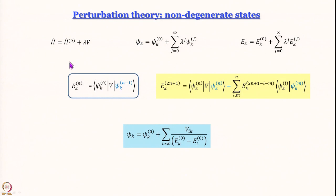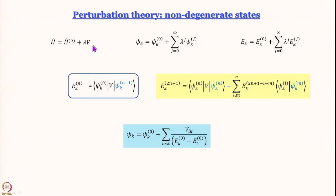Before that, let us not forget what we have studied. In perturbation theory for a non-degenerate state, one can represent the wave function as an unperturbed wave function — essentially the wave function of a system which is exactly solvable. We have studied many such examples: harmonic oscillator, rigid rotor, hydrogen atom. We say the perturbation is small, so you can write the wave function of the perturbed system as the unperturbed wave function plus a correction term. Similarly, the Hamiltonian is written as the unperturbed Hamiltonian plus lambda times V. The energy of the nth order correction is given by an integral, and we can work out even the 2n+1 th order correction.